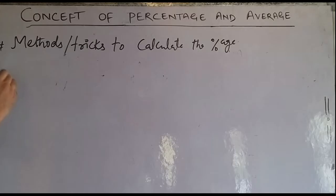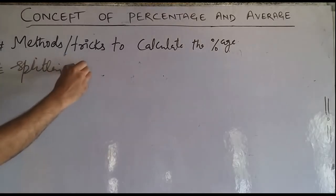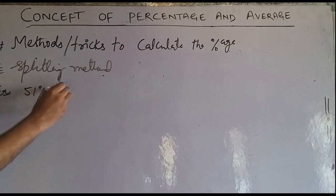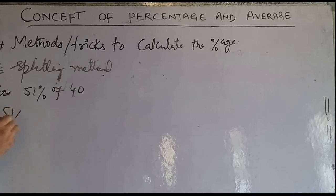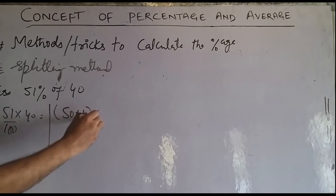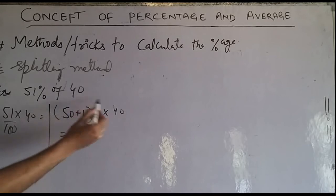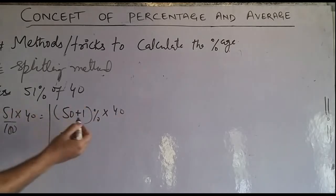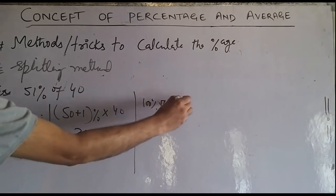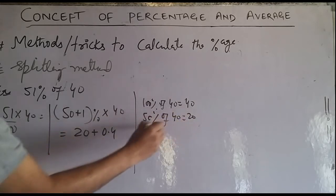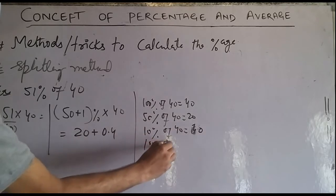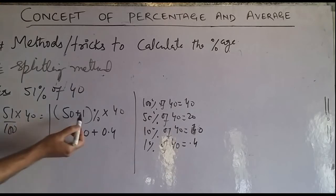The second method is the splitting method. In this method, we split the percentage into known parts. For example, 51% of 40: split as 50 plus 1 percent. 50% of 40 is 20, 1% of 40 is 0.4. We know 100% of 40 is 40, 10% of 40 is 4, and 1% of 40 is 0.4.